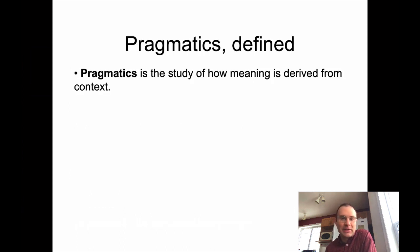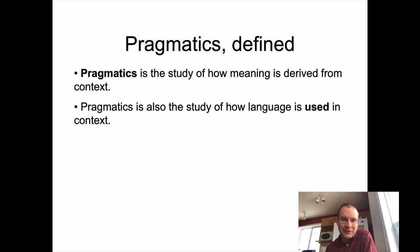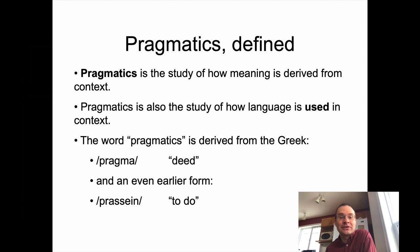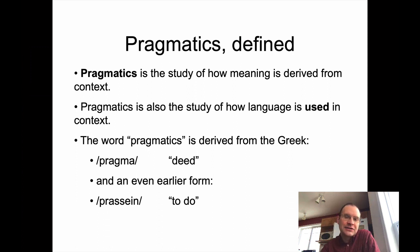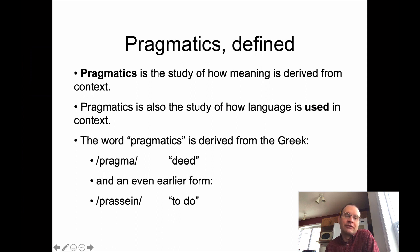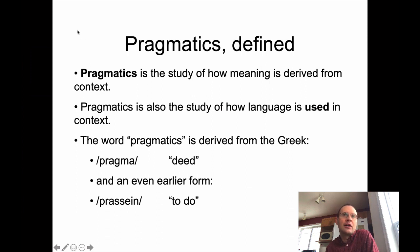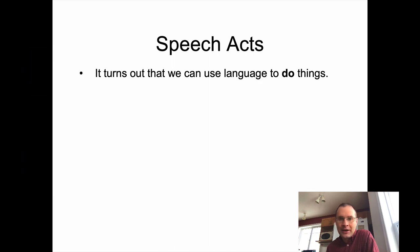Pragmatics is the study of how meaning is derived from context — also the study of how language is used in context. Pragmatics is a word derived from ancient Greek, as are a lot of terms in linguistics. 'Pragma' meant 'deed' in ancient Greek, and there's an even earlier verb form 'prassen,' from which this word is derived, meaning 'to do.' So in a sense, we're thinking about how we can do things with language when we think about the meaning of utterances as they're spoken in context.